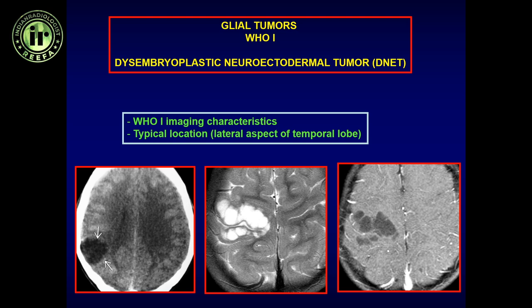The dysembryoplastic neuroepithelial tumor tends to be along the lateral temporal-parietal region, as opposed to the mesial temporal lobe. It is a low-grade neoplasm that grows very slowly, involves both cortex and white matter, and can have a bubbly appearance. It is completely non-enhancing, generally low attenuation on CT, low T1, bright T2 signal, with no enhancement. They very infrequently cause significant mass effect, have a very narrow zone of transition where the adjacent brain is completely normal, and may present with seizures or headache or be incidentally detected.